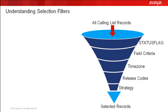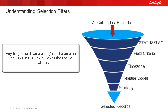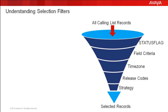So let's talk about the first one. The status flag field in the calling list record tells the system if the record is callable or not. If the status flag field is anything other than a blank, that means the record is uncallable. Processes like do not call or a duplicate rejection process write a character into the status flag field, which makes the complete record uncallable. So at the very first filter, all records with a blank status flag field pass through, and those with something written in the status flag field are discarded.